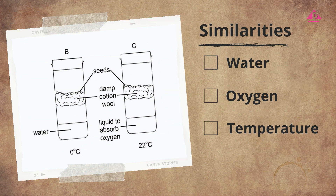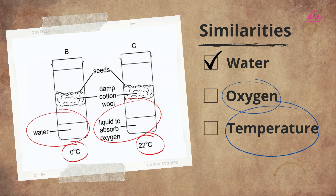Lastly, is it possible to get any useful information by comparing setups B and C? The only similarity between these two setups is the damp cotton wool beneath the seeds, meaning that water is available. However, both the temperature and oxygen conditions differ — one setup has a different temperature, and one is aerobic while the other is anaerobic. This means that both oxygen and temperature are independent variables.